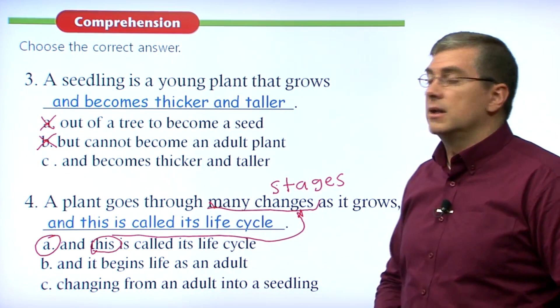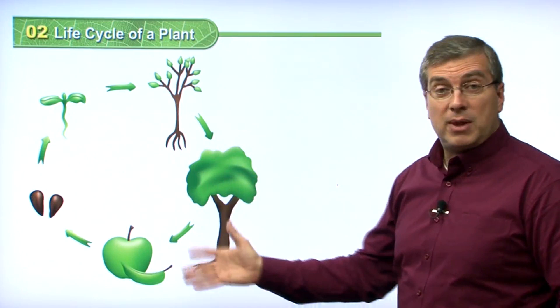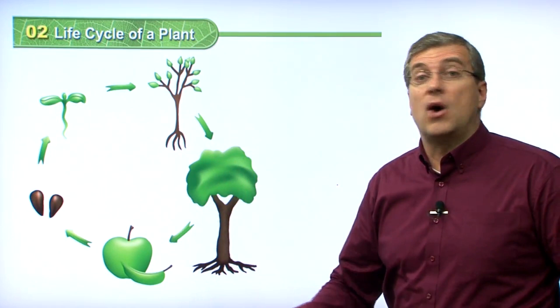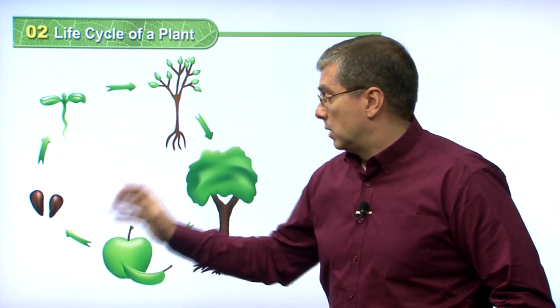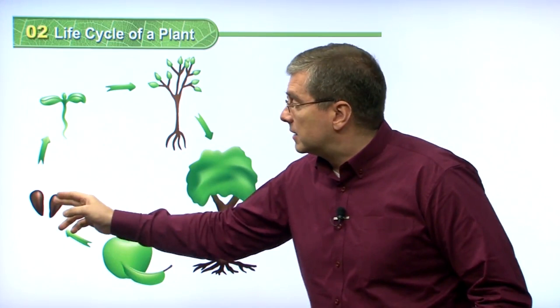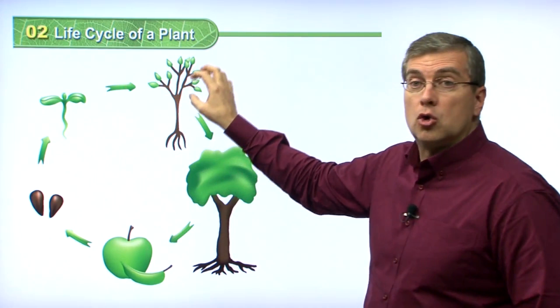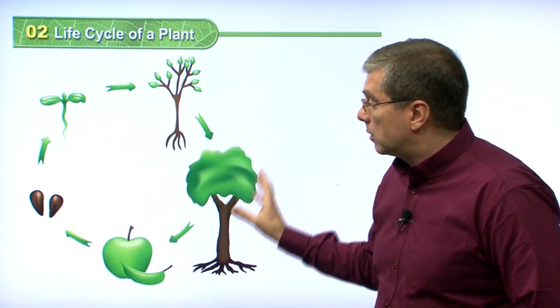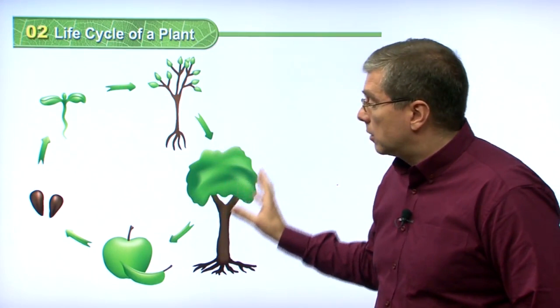We've talked about the life cycle of a plant — it's really amazing. This is the cycle of life, and all living things go through it. Plants start as a seed, the seed turns into a seedling, the seedling becomes a growing plant, the growing plant becomes an adult, and the adult creates fruit to start the life cycle all over again. Well, I hope you've learned a lot in this lesson. Take care everybody and we'll see you next time. Goodbye.